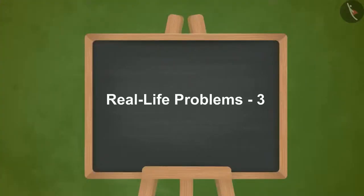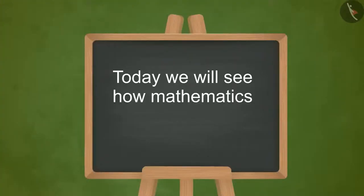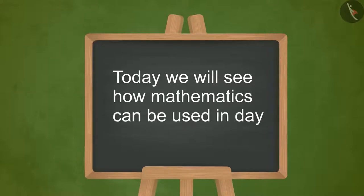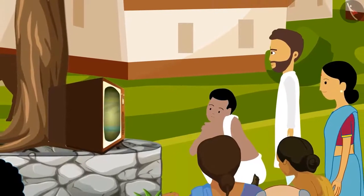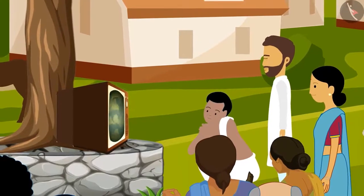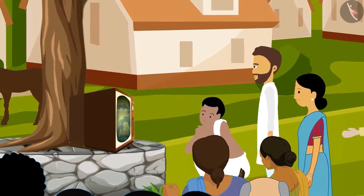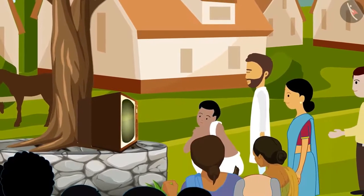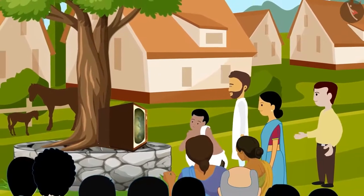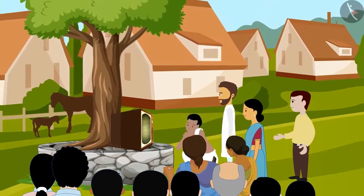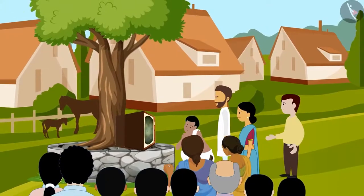Real Life Problems. Today we'll see how mathematics can be used in day-to-day activities. This is Karim Bhai. Last year, the yield of his crops was not so good. He watched in the Krishidarshan program on Panchayat Khars TV that the fertile capacity of land reduces due to years of farming. He also learnt that if he grows grains of pulses along with wheat, the soil of his field will become fertile again.